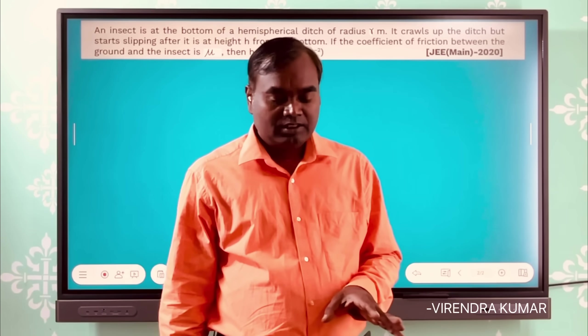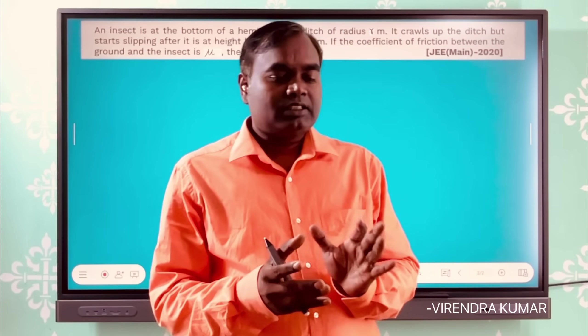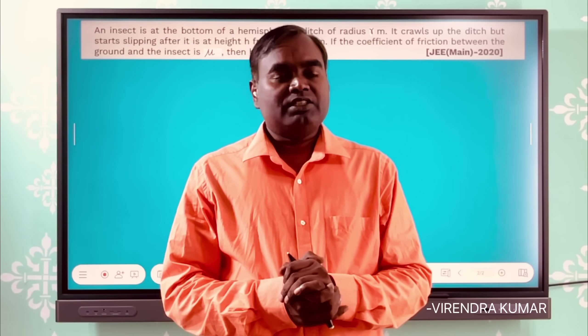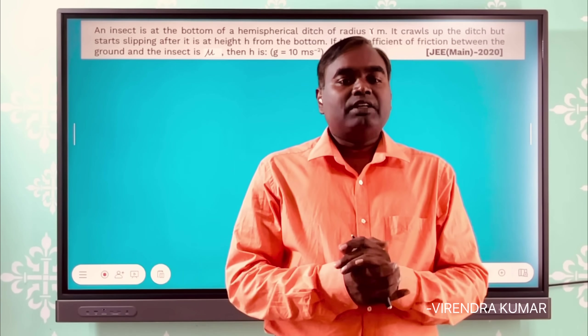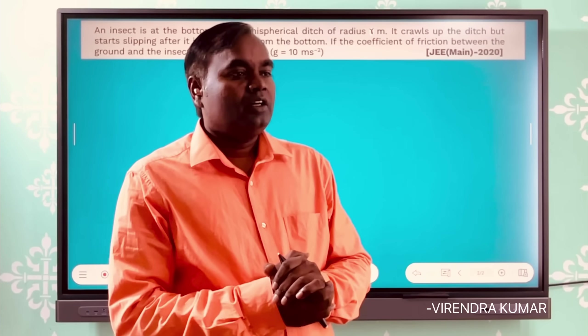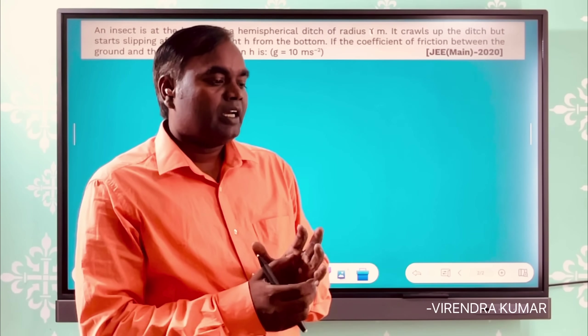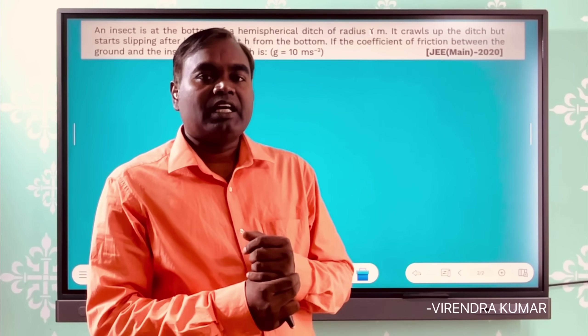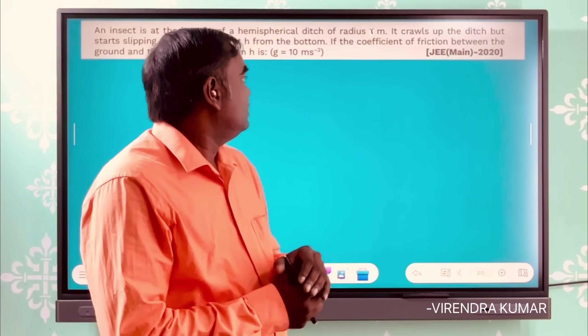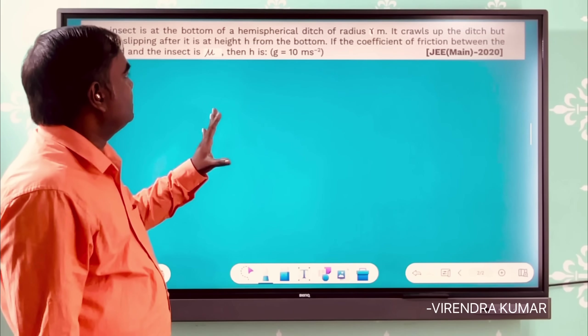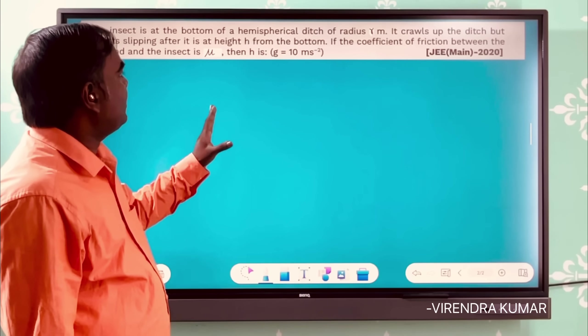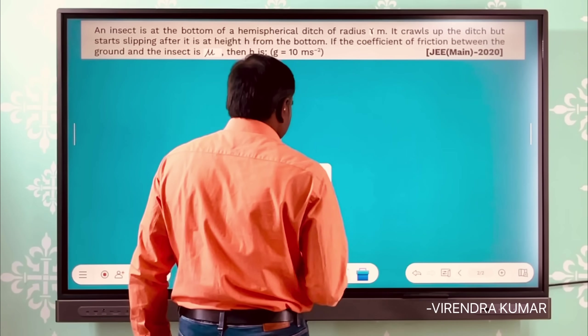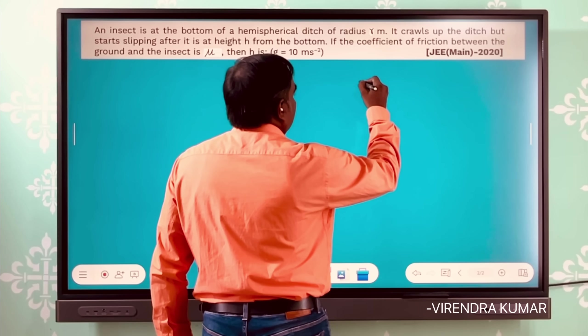This type of question is used to ask in competitive examinations, so I thought to derive a general expression in which you can put the numerical value to get the desired result instantly. So let's derive the general relations and find the value of h. As per the question, an insect is moving...